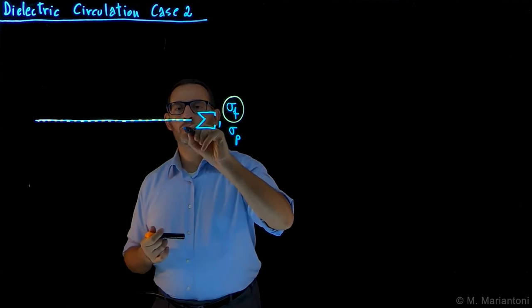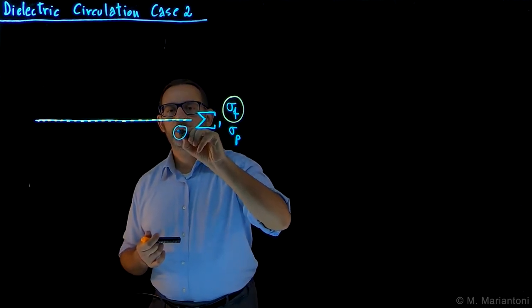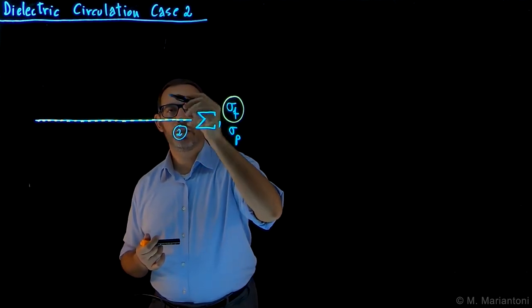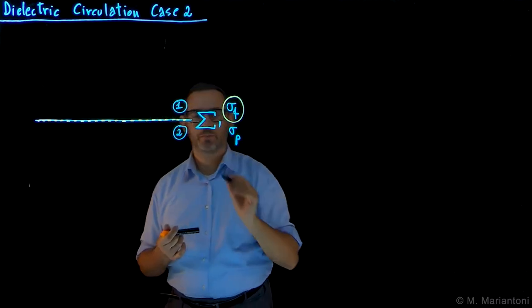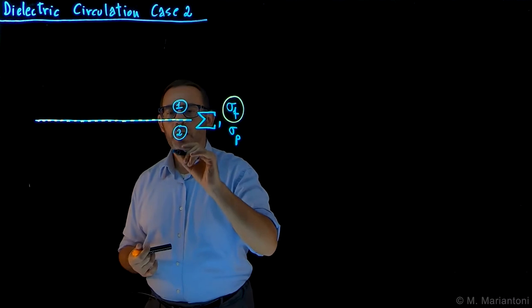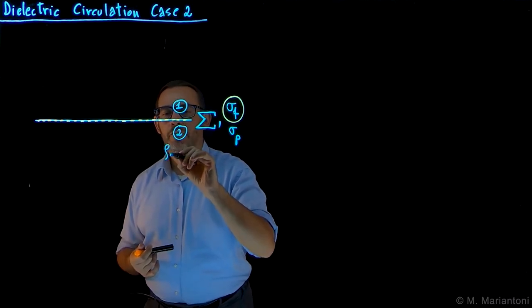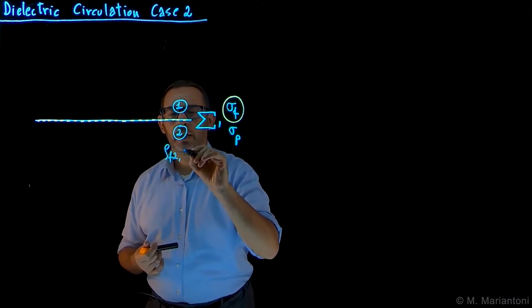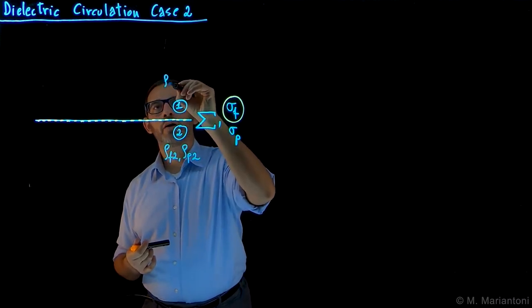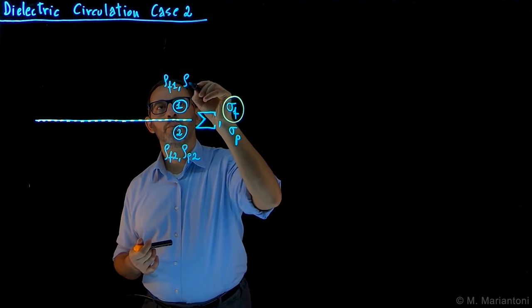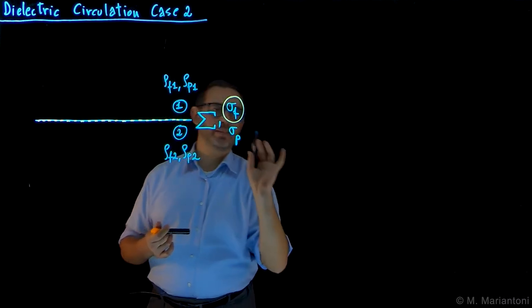As before, we call 2 the material below in 2D and the material above is 1. Below we can have a rho free 2 as well as a rho p2, and above we can have a rho free 1 as well as a rho p1 for complete generality.